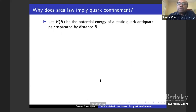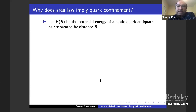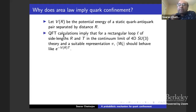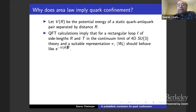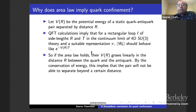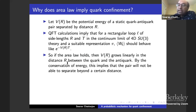Why does the area law imply confinement? Let V(R) be the potential energy of a static quark-antiquark pair separated by distance R. Computations from quantum field theory indicate that if you have a rectangular loop of side lengths R and T in the continuum limit of four-dimensional SU(3) gauge theory, with a suitable representation pi, the Wilson loop expectation should behave like exp(-V(R) * T). If the area law holds, V(R) should grow linearly in R — the force remains constant, and by conservation of energy, the pair will not be able to separate beyond a certain distance.